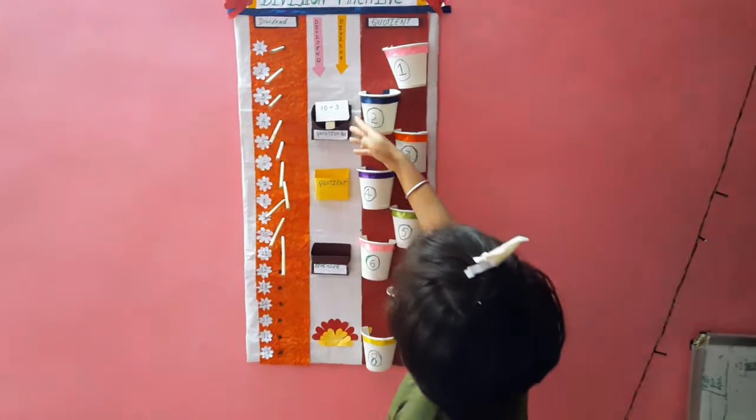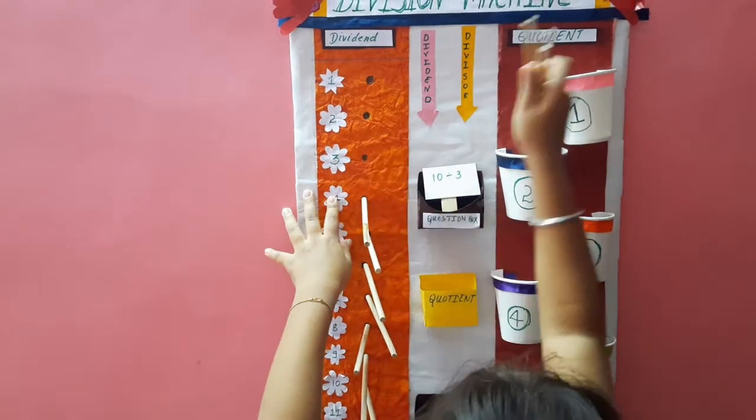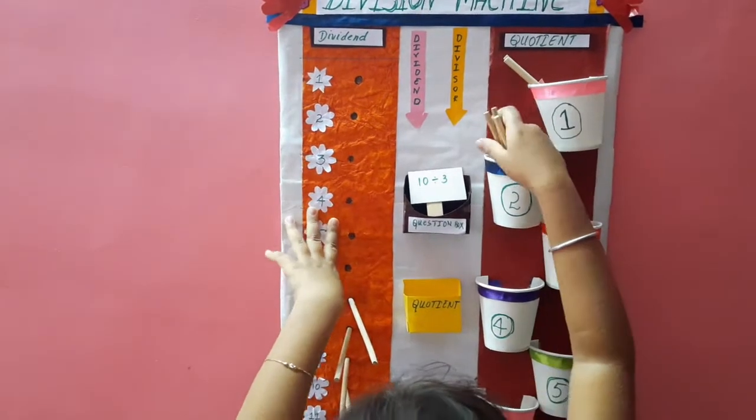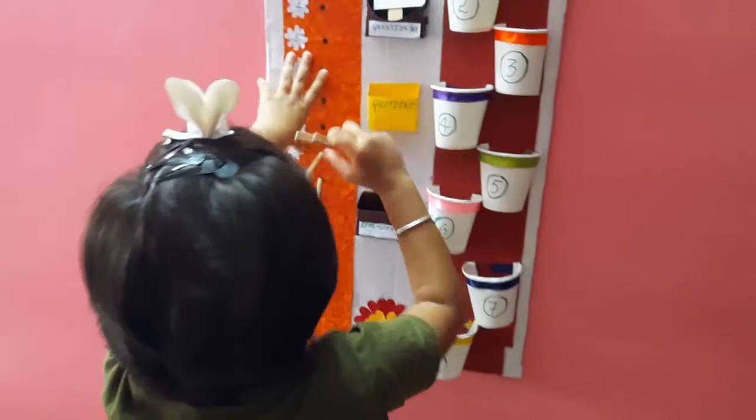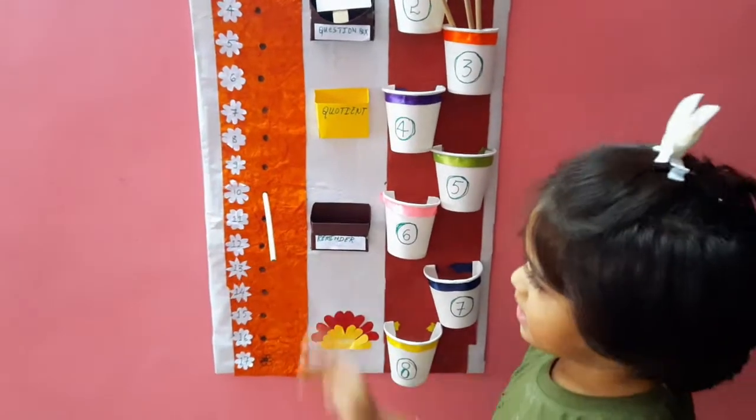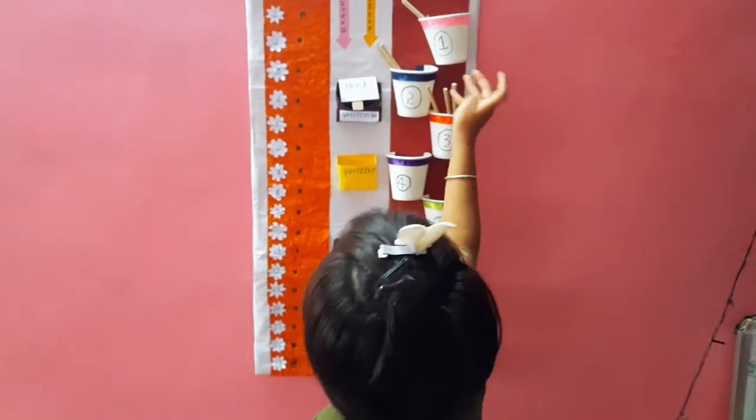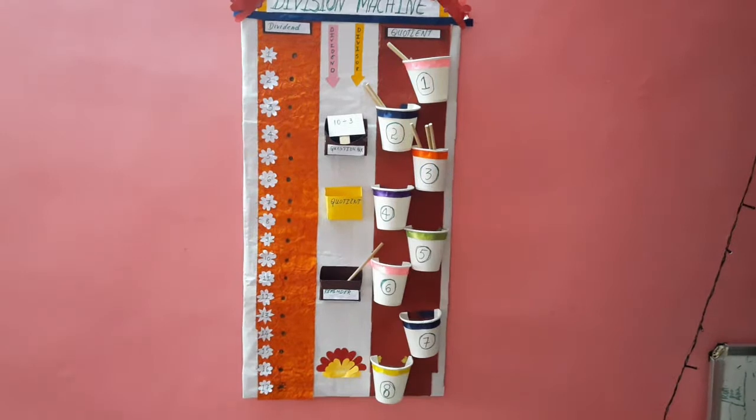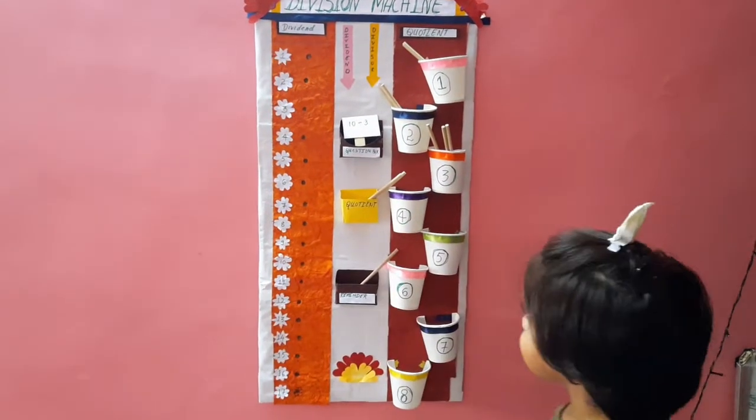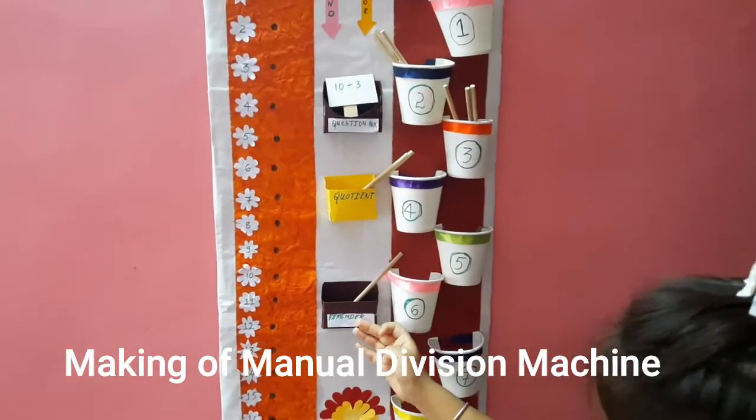Now, the divisor is 3. So, now we'll take 3 sticks and put it in 1 cup. Another 3 and another cup. Oh! There is just 1 left. But we need 3. So, we'll put it in reminder. And the quotient will be 3. So the answer is quotient is 3 and reminder is 1.